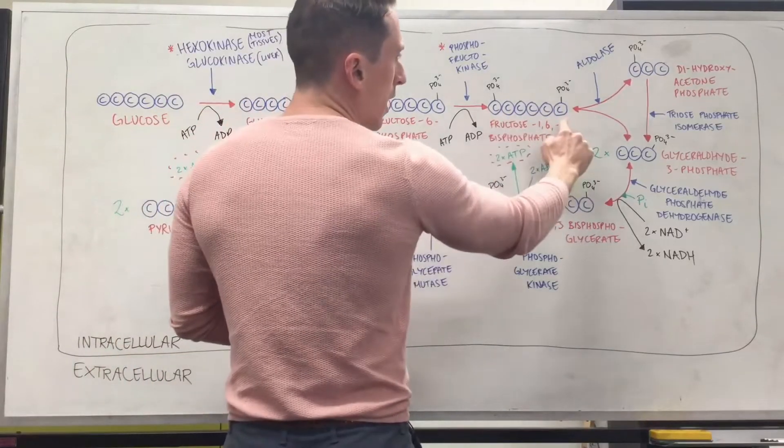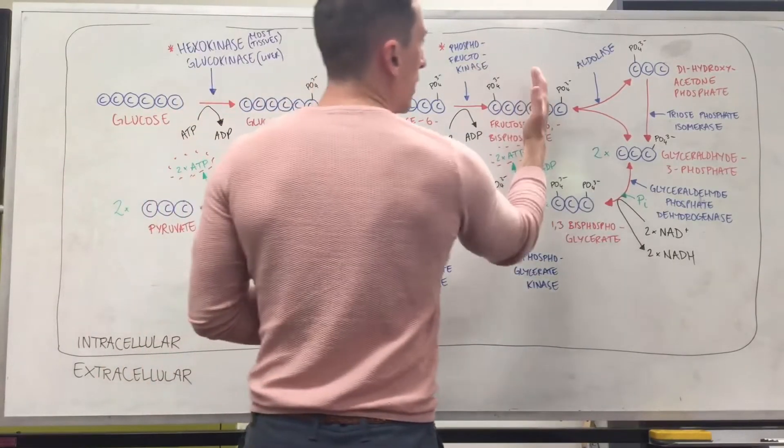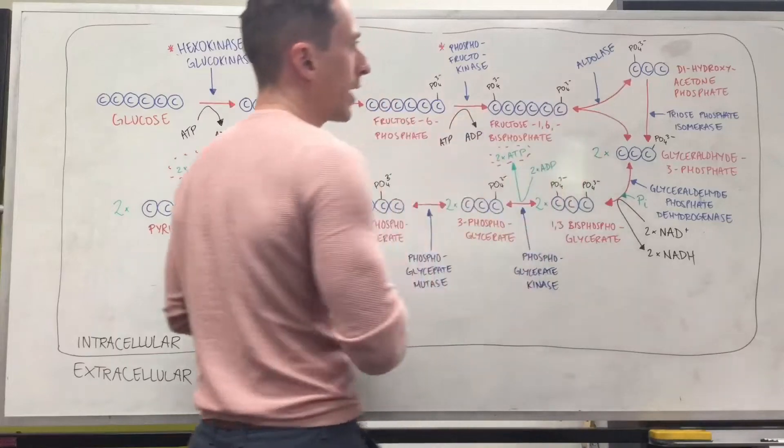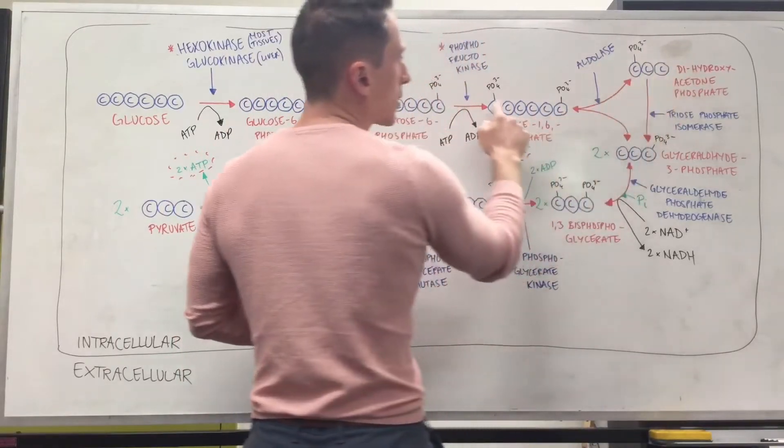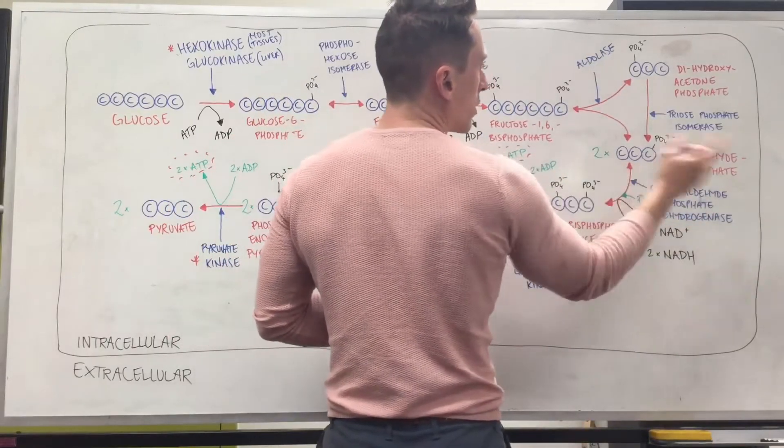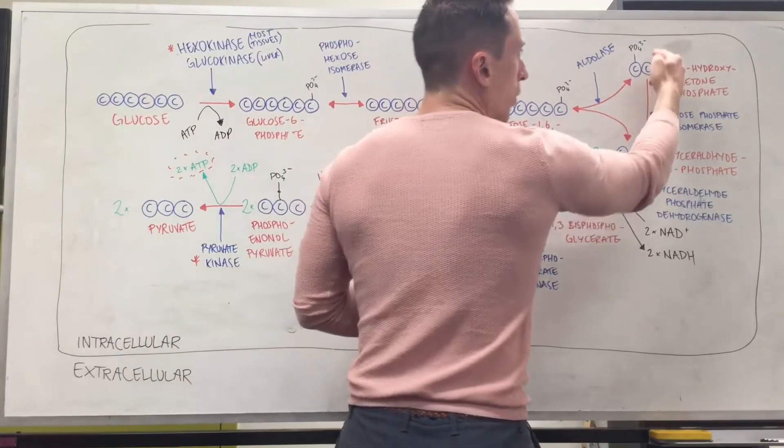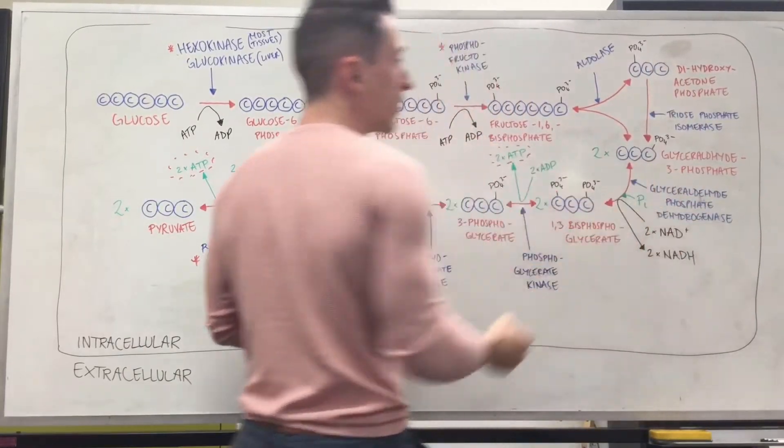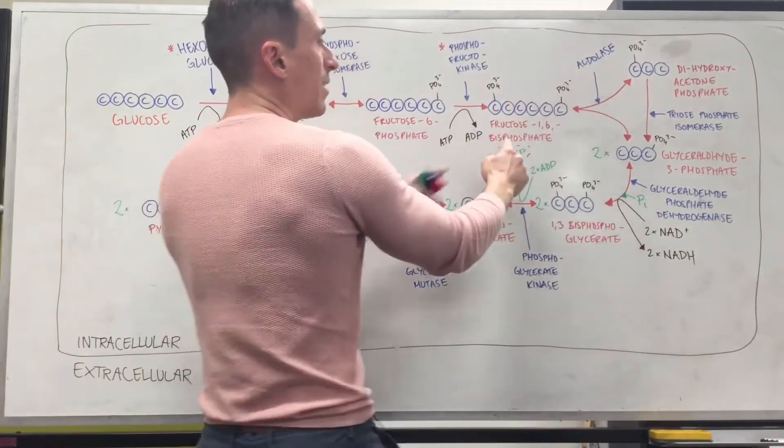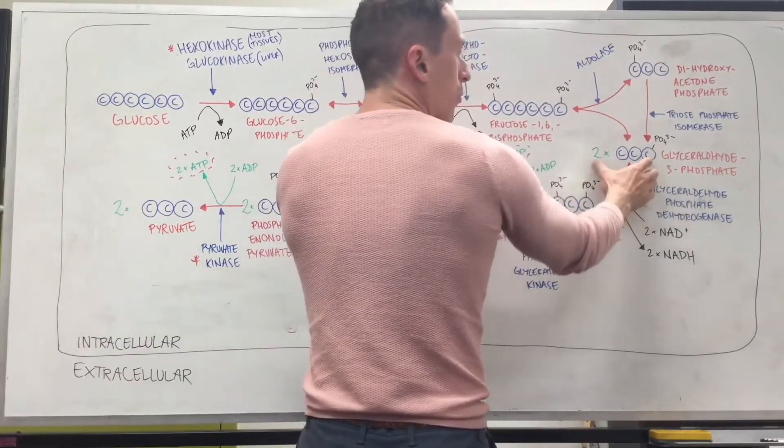Now that we've got a 6-carbon molecule with a phosphate on the first position and the 6th position, we need to split it in half. When we split it in half we now produce two 3-carbon chains. One called dihydroxyacetone phosphate that's got the phosphate on the first carbon, and another one called glyceraldehyde 3-phosphate with the phosphate on the third carbon. Now the thing is this dihydroxyacetone phosphate will always turn into glyceraldehyde 3-phosphate, which means basically when you have one molecule of fructose 1,6-bisphosphate it predominantly turns into two molecules of glyceraldehyde 3-phosphate.